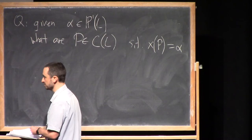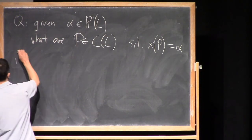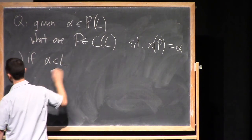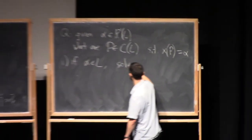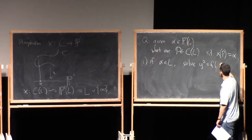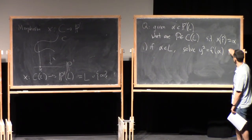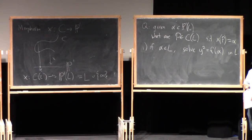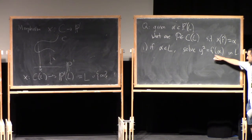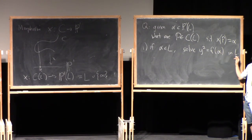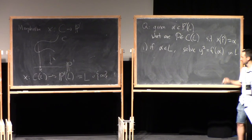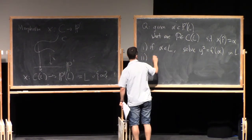There are two cases. First case — very easy — if α is in L, i.e., if α is in the affine part, then we just solve y² = f(α) in L. We calculate f(α) and then either it's zero, in which case there's one point, or it could be a non-zero square in L and we get two points, or it could be a non-square and we get zero points.